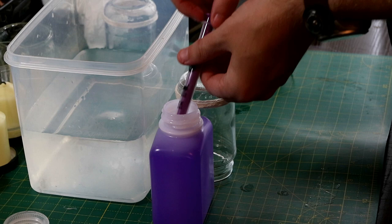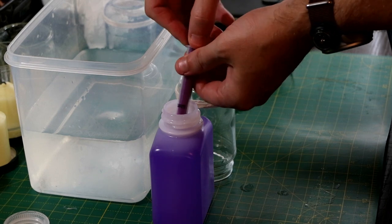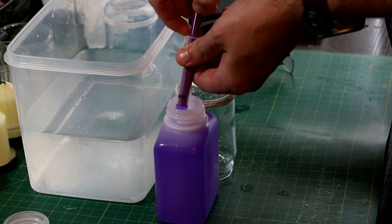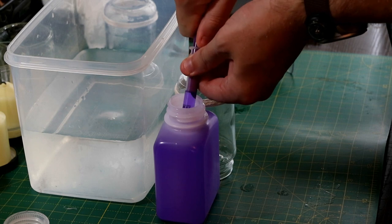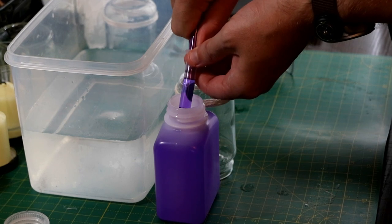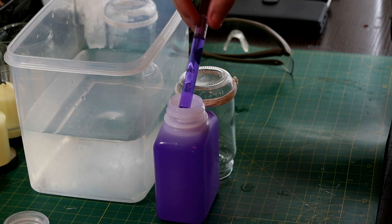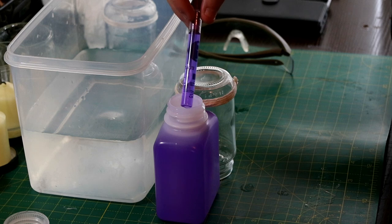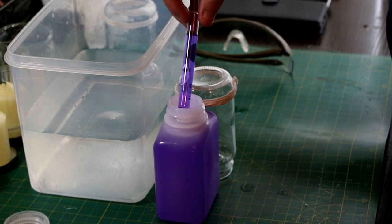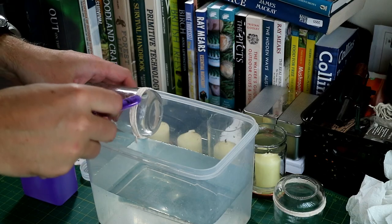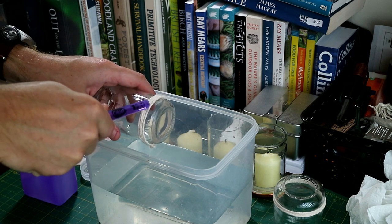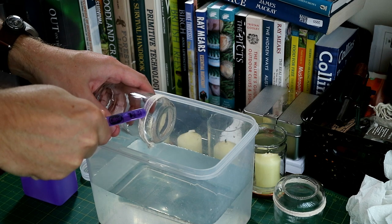So the next thing we need to do is apply the methylated spirit to the string using this medicine syringe. You don't have to do it this way, I'm just doing it this way because I found that a neater way to apply the meths to the string rather than dunking the string in and then trying to wrap it around the jar afterwards. It gets really messy doing it that way. And then just over your bucket of water just gently squeeze the methylated spirit on.